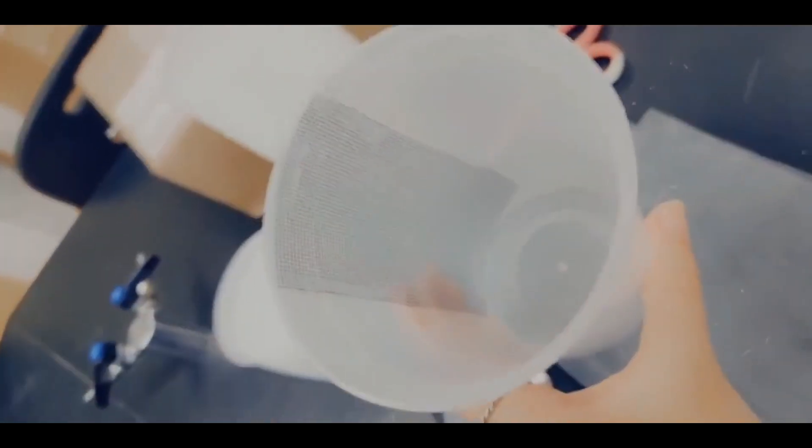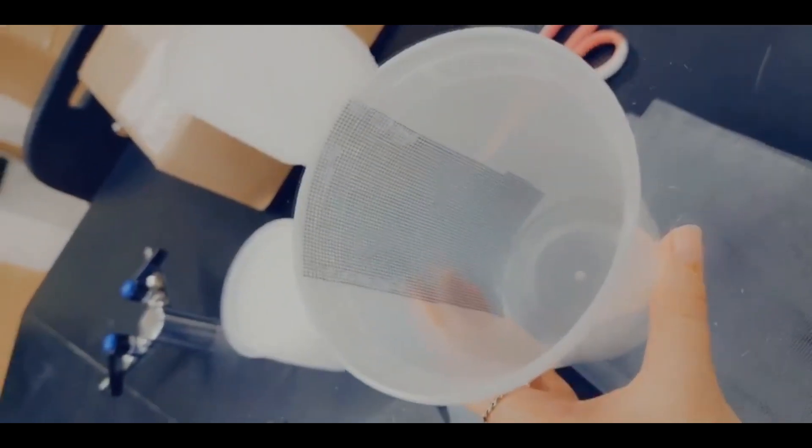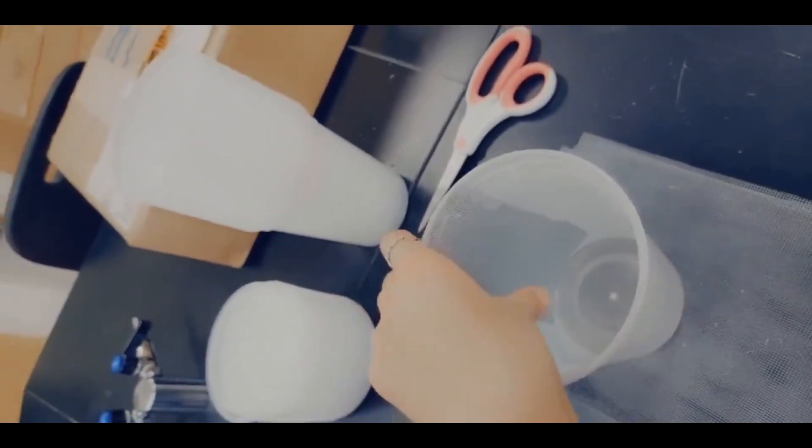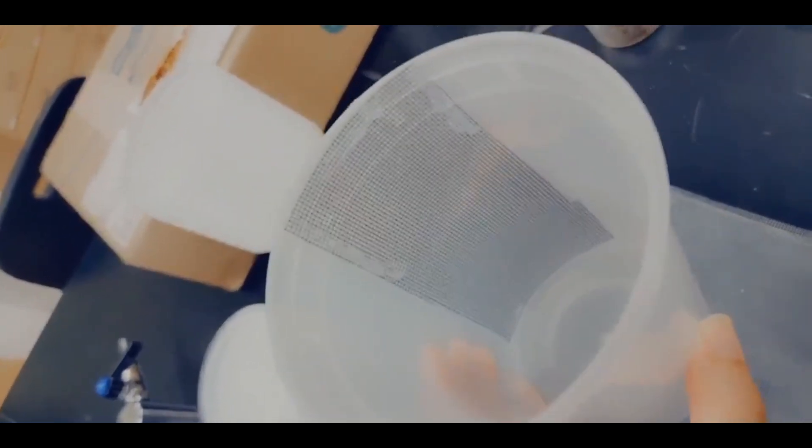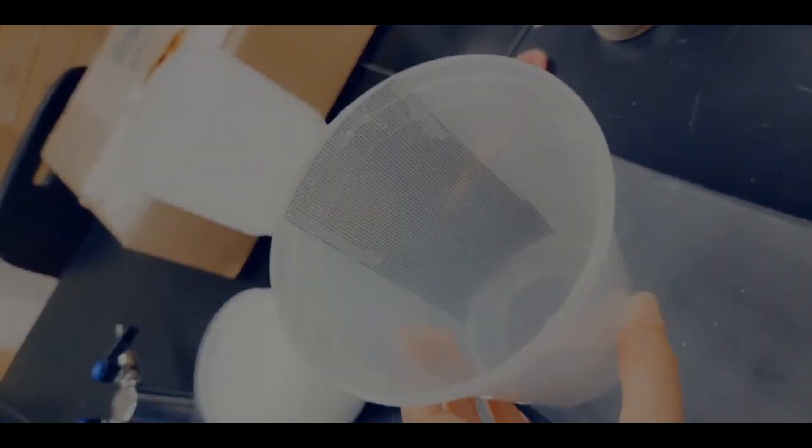Window screen is an awesome tool for raising nymphs because you can use it to make a mesh cover. And you can also put it inside the container that you're rearing your nymph in because the nymph will crawl up this mesh when it's ready to metamorphose. And you can just tape that in there or hot glue it in there like I did.